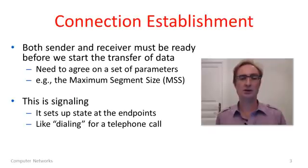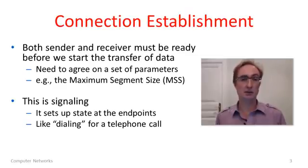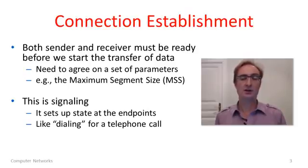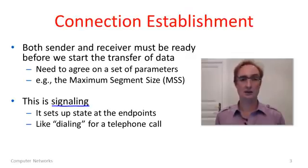Connection establishment is really the process of the sender and receiver coordinating or synchronizing themselves to prepare for the start of data transfer. To do this they need to tell one another or agree on a set of parameters, including for instance the maximum size of segments they'll send amongst one another. All of this is done with segments which transfer control information rather than data — this is called signaling — to set up connection state in the sender and the receiver. You could think of it as analogous to dialing in the telephone network before you actually transfer the data.